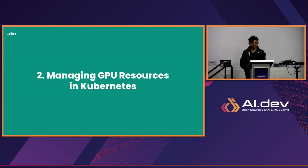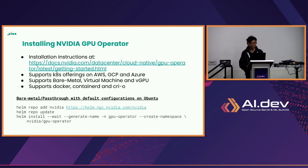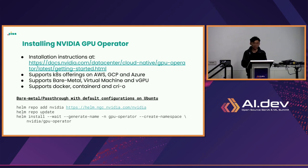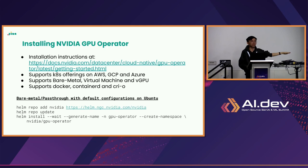Now let's talk about managing GPU resources in Kubernetes. First, you install the GPU operator — this is straightforward. Go to NVIDIA's documentation and find your configuration. NVIDIA supports many deployment types: if you're on EKS, GKE, or AKS you're supported; bare metal, virtual machines, and vGPU are also supported. All major container runtimes work — Docker, containerd, and CRI-O. The installation is simply adding the NVIDIA Helm repo and installing the Helm chart.